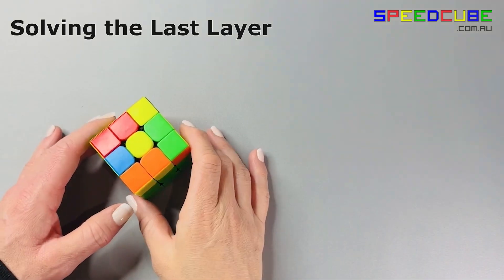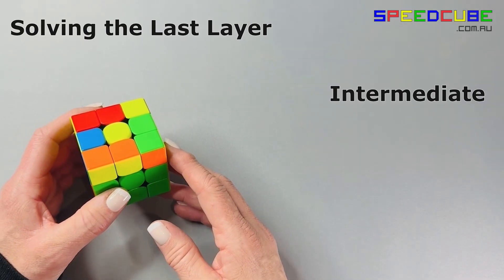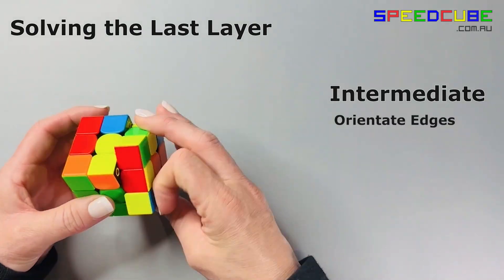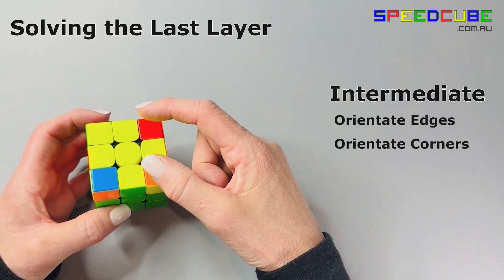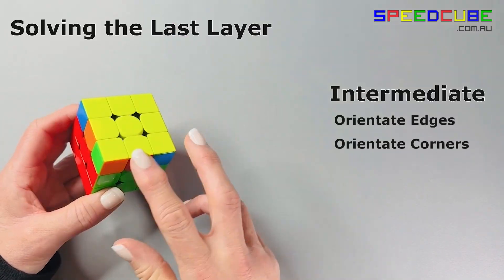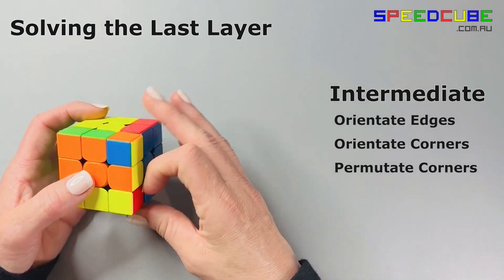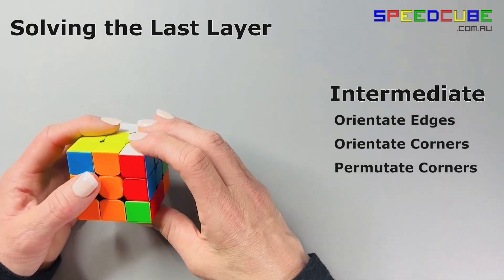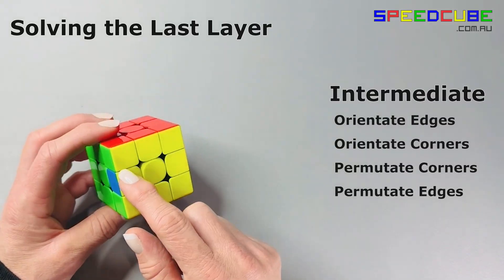The second way to solve the last layer is what I would call the Intermediate Method. Again, you start by making the last layer cross, this time with a little shortcut. And then you orientate the last layer corners, meaning you get them all to face upwards. Then you move the corners into their correct spots, so permutate the corners. And lastly, you move the edges into their correct positions.